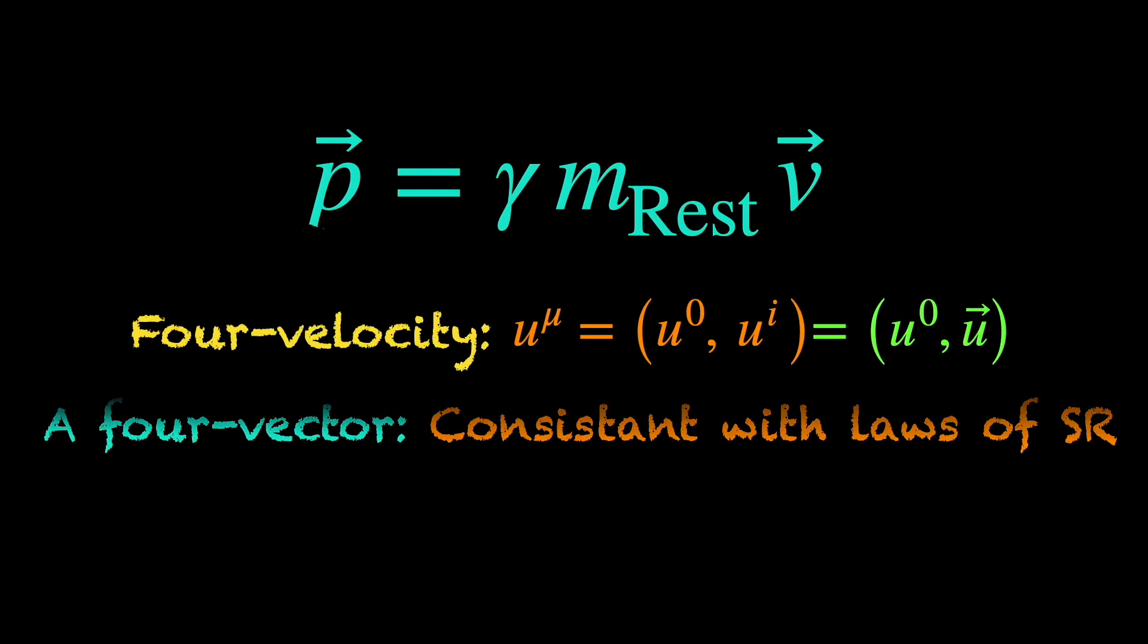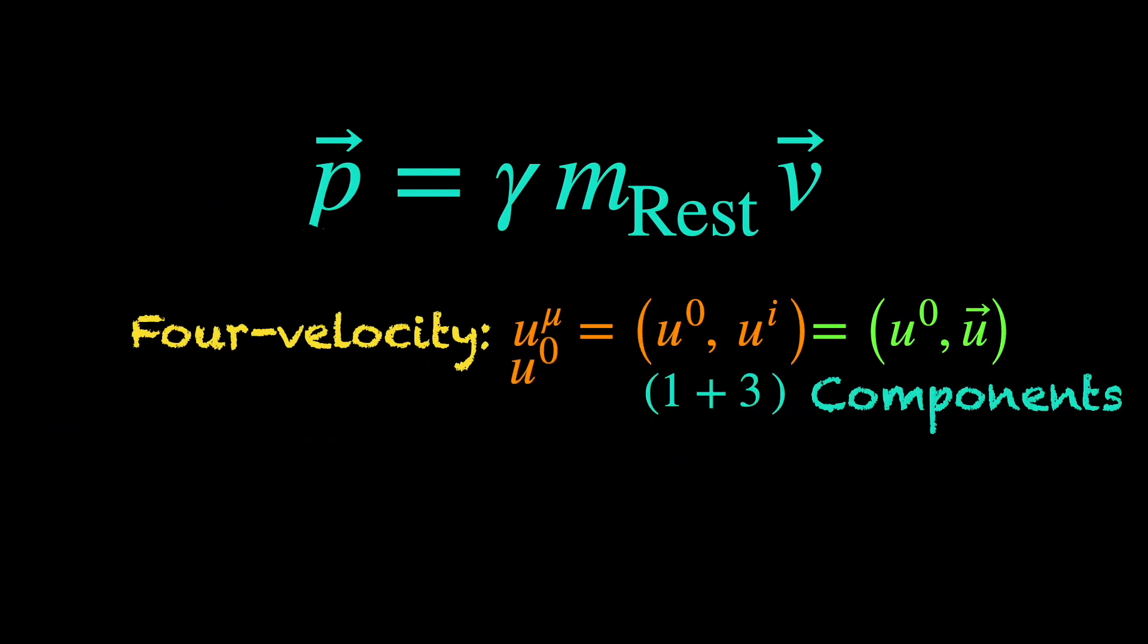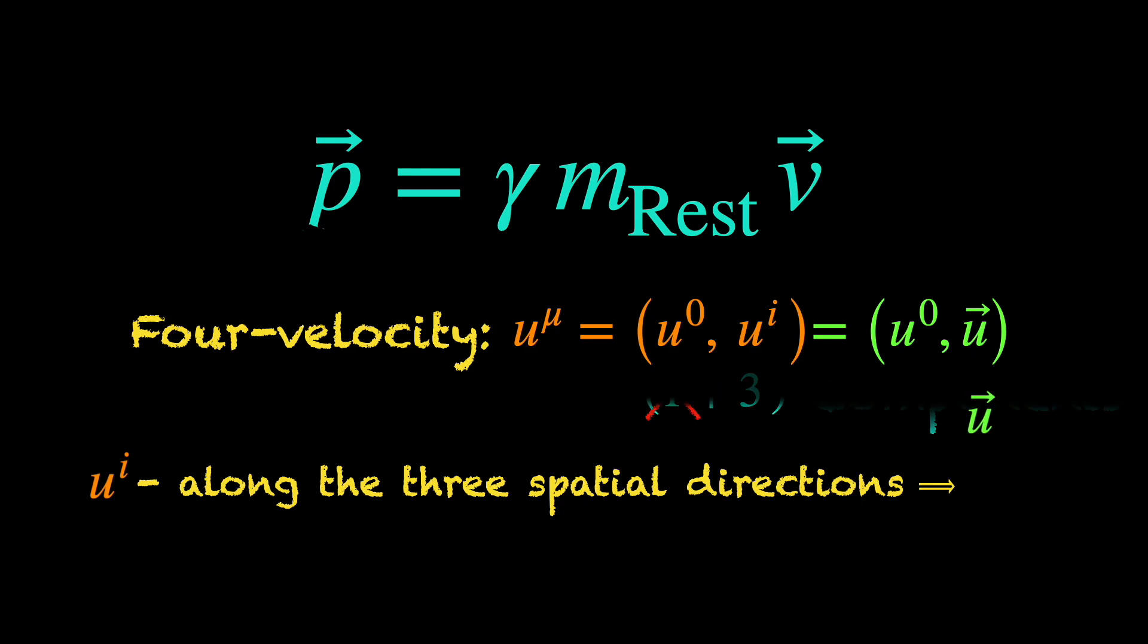Of course, 4-velocity has 4 components. The 0-th component is along the temporal direction or time direction. We do not need that in this video. The remaining 3 are in the 3 spatial directions. Together, they make a 3-dimensional vector, let's say u-vector.